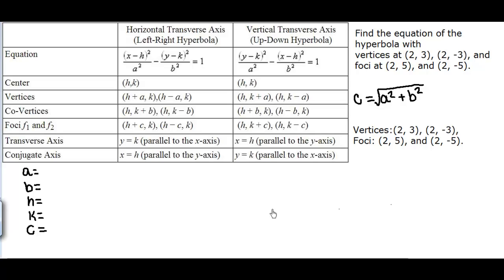The first thing I would like to do is determine if this is going to be a horizontal transverse or a vertical transverse axis hyperbola. So what I'm going to do is look at the vertices and determine if H or K is being shifted. If you notice in both points, H has the same value, 2 and 2.